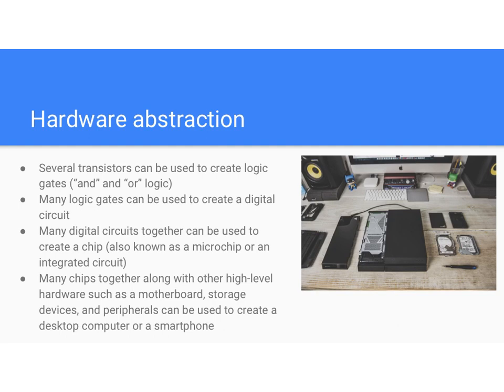Hardware abstraction is the idea that we can build on top of more complicated layers. At the bottom of a computer it's very complicated — you have a bunch of transistors all set to zeros and ones. It would be very hard to program if our only option was setting zeros and ones on transistors. But if you take a bunch of transistors and collect them together, you can create a logic gate that can do AND and OR logic.